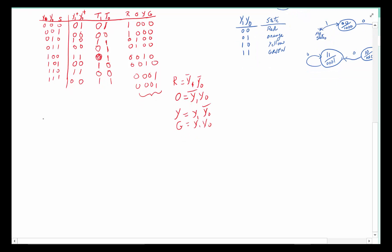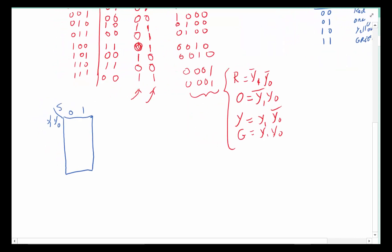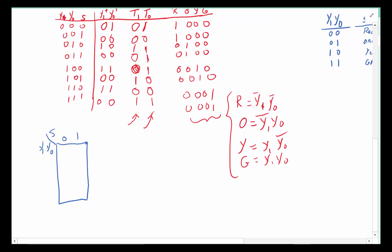Now we need to look at the T1 and T0 columns to write the equations. Since I can't easily see the minimum by inspection, I recommend doing a Karnaugh map. We set up the K-map with Y1 and Y0 on one axis and S on the other, with values zero, zero, zero, one, one, one, one, one, one, zero. This is our T1 map.